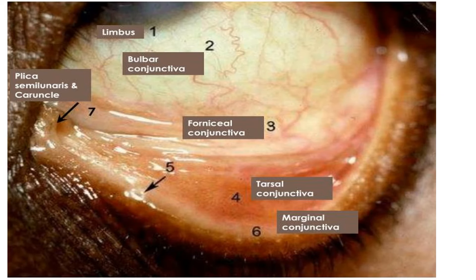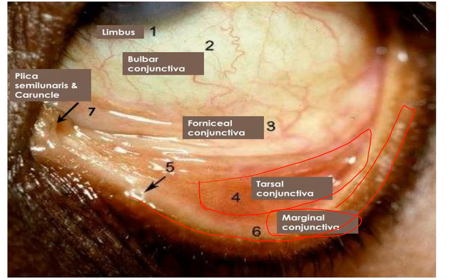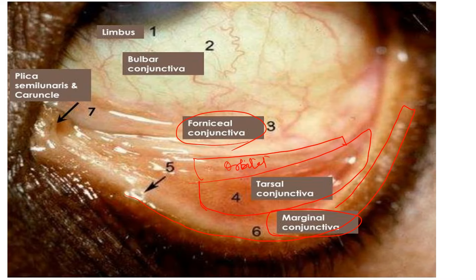Let us have a brief overview with this picture. The eyelid ends are called the margin, so the conjunctiva covering the eyelid margin is called the marginal conjunctiva. The tarsal plate is inside the eyelid, so the conjunctiva covering the area of the tarsal plate is called the tarsal conjunctiva. From the tarsus to the fornix, the tarsus is not present and that part is covered by the orbital septum — the conjunctiva covering that area is called the orbital conjunctiva. Then we reach the fornix, covered by the fornicial conjunctiva. The part covering the sclera is the scleral conjunctiva, and near the cornea we have the limbal zone, so that conjunctiva is called the limbal conjunctiva.